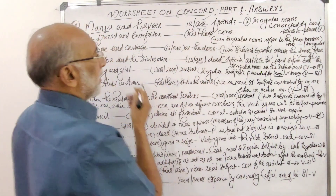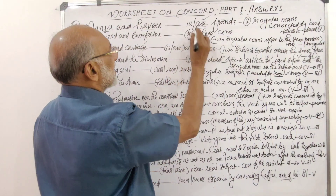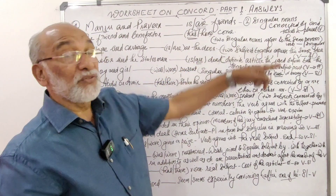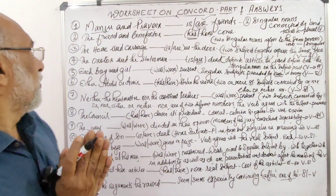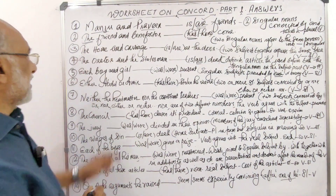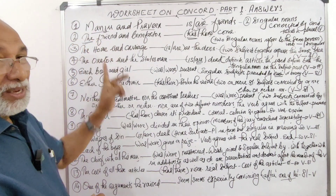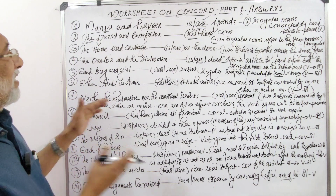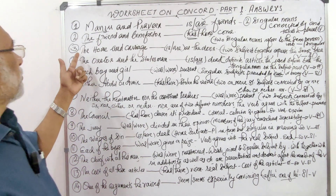Question 2: 'The friend and benefactor has/have come.' The correct answer is 'has.' Why? Because the two singular nouns refer to one and the same person. Notice that the definite article 'the' is used only before one singular noun, which indicates that both titles refer to the same individual.